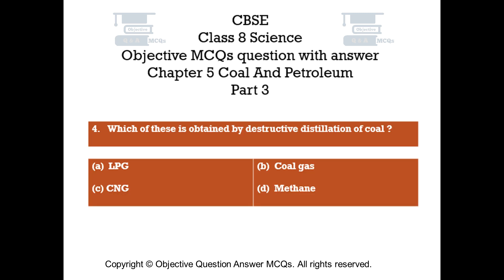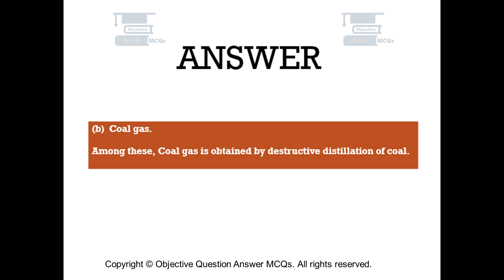Question number 4. Which of these is obtained by destructive distillation of coal? Option A: LPG. Option B: Coal gas. Option C: CNG. Option D: Methane. The right answer is Option B, Coal gas. Among these, coal gas is obtained by destructive distillation of coal.